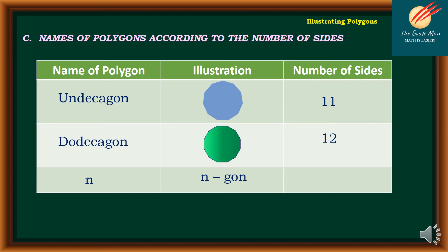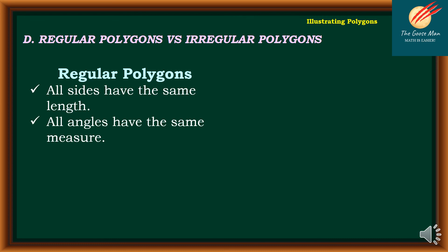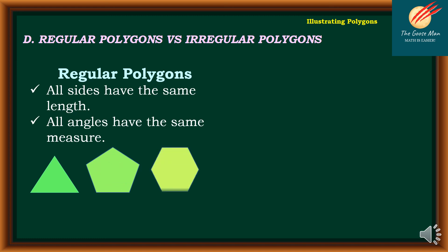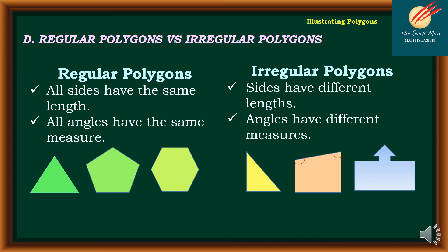Those are the names of polygons according to the number of sides. Next, regular polygons versus irregular polygons. Regular polygons mean all sides have the same length and all angles have the same measure — examples include equilateral triangle, regular pentagon, and regular hexagon. Irregular polygons mean sides have different lengths and angles have different measures.